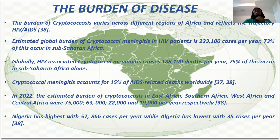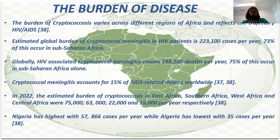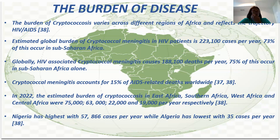This disease is prevalent across different regions of Africa, and it follows the trajectory of HIV. Where you have high HIV rates in a region, there is a tendency that cryptococcosis also has an impact in that area. For cryptococcal meningitis specifically in HIV patients, there are approximately 233,100 cases per year, with 73% occurring in sub-Saharan Africa. There are about 188,000 deaths per year, with 75% occurring in Africa. These meningitis deaths account for 15% of HIV-related deaths worldwide.